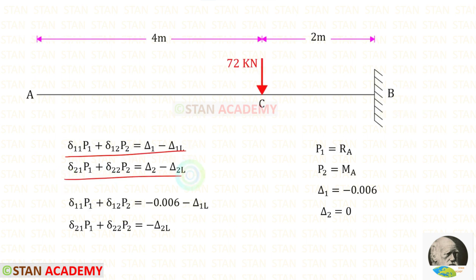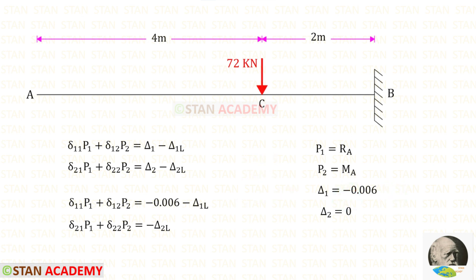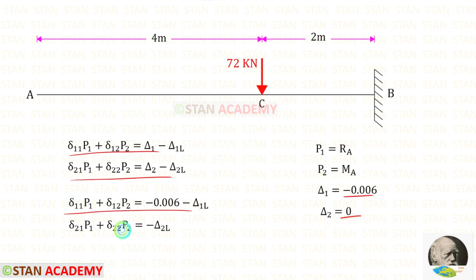In these two equations let us find delta 1 and delta 2. We know that support A settles by 6 millimeters. When we divide that by 1000 we get 0.006 meters. So delta 1 is equal to 0.006. Since the settlement occurs downward it should be negative. For delta 2, since there is no rotation at support A, delta 2 will be equal to 0. Let us now apply the values of delta 1 and delta 2 into these two equations.